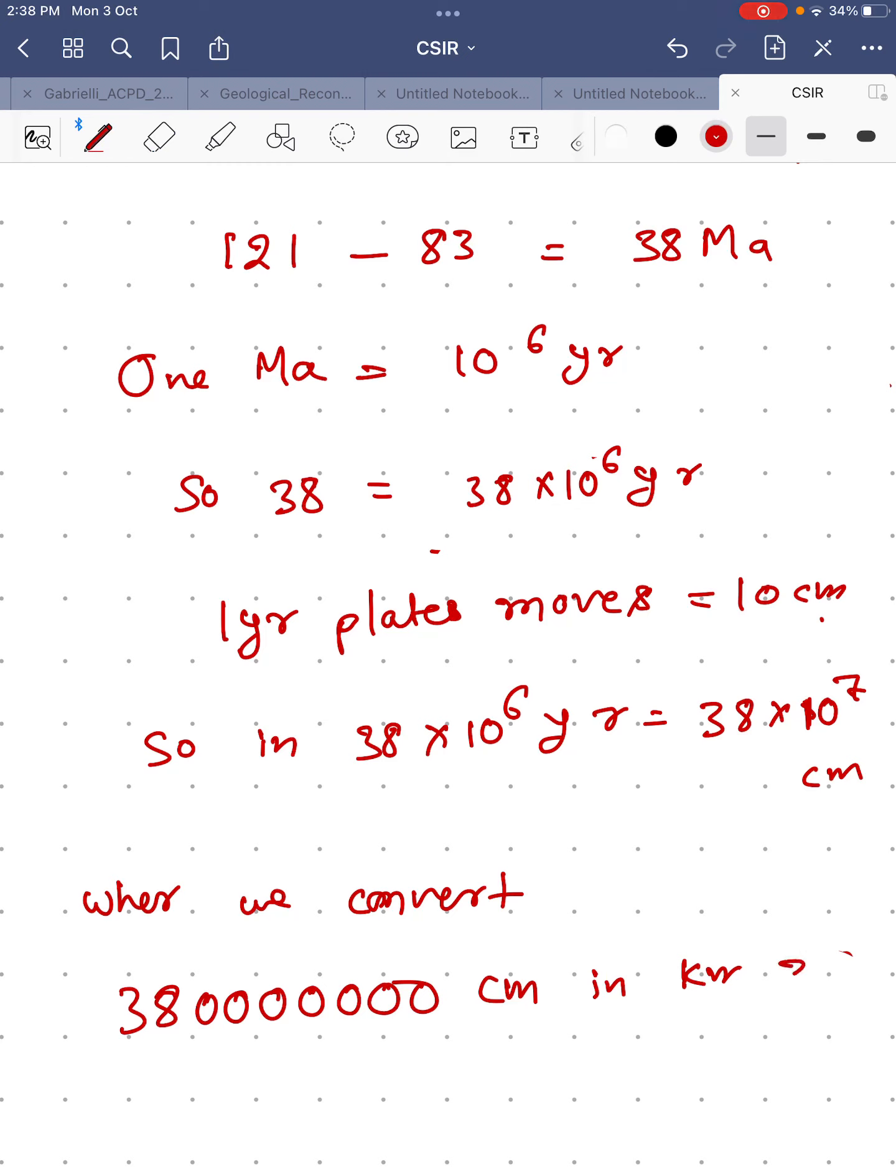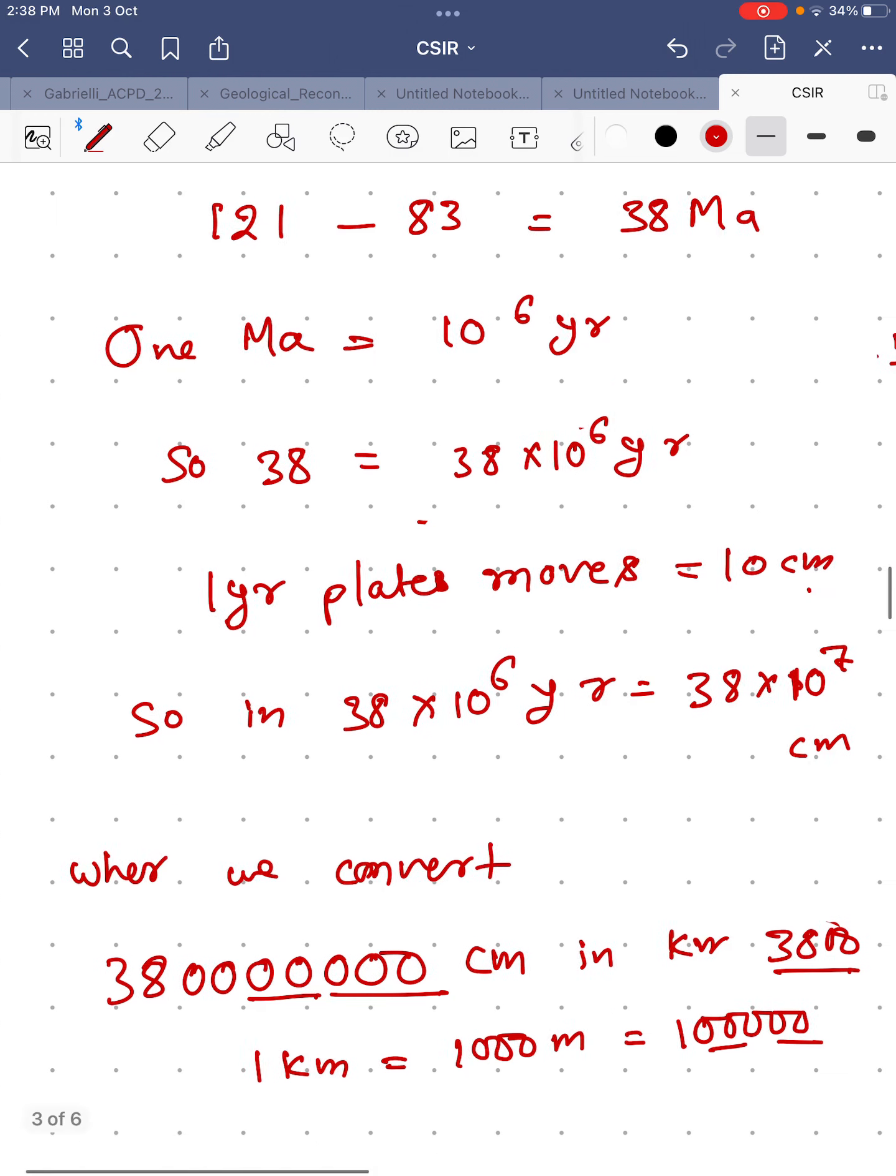Because see, one kilometer is equal to 1000 meters and one meter is equal to 100 centimeters, so that's 5 zeros total. If you remove 5 zeros from this you will get 3,800. So this 3,800 kilometers you got.